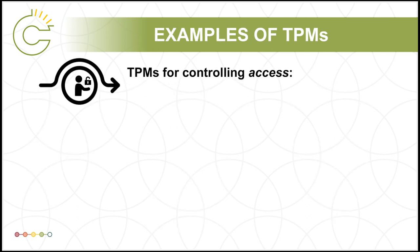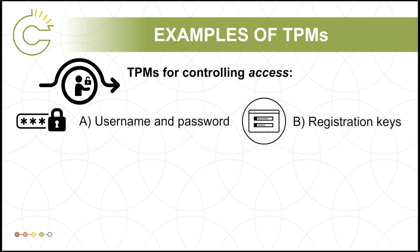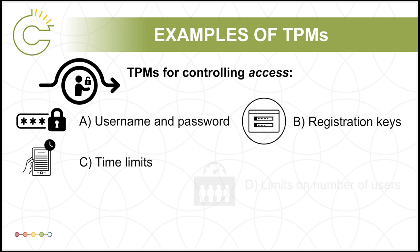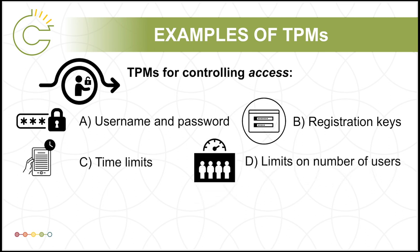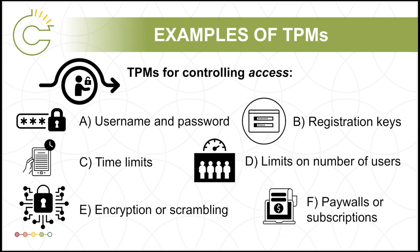TPMs that are for controlling access might include a username and password system, registration keys such as a software's activation code, time limits like those set on your library ebooks with a 14-day restricted access period, limits on the number of simultaneous users like those that restrict the number of people using your Netflix account simultaneously, encryption or scrambling such as regional encoding on DVDs or IP blocking based on your location, and finally, paywalls or subscription software that limit access to online content.